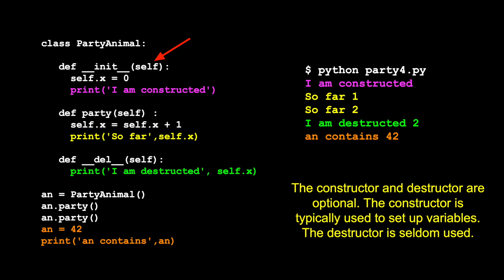Again, we pass in the instance of the object, self. And in this one, all we're going to do is print out that you're constructed. And here's this code that we've had before.